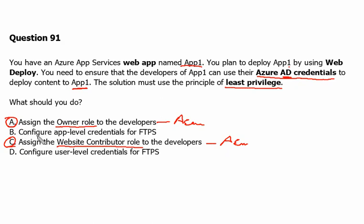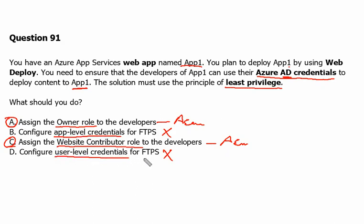However, Option B and Option D are not Azure roles which can be associated with an Active Directory user. We will see on the Azure portal what the app-level credentials and user-level credentials are for the web app.